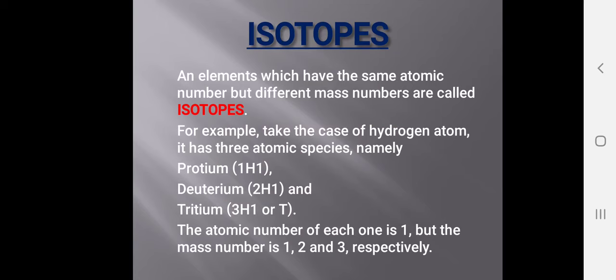Isotopes are elements that have the same atomic number but different mass numbers. For example, hydrogen has three atomic species: protium, deuterium, and tritium. All three have the same atomic number of 1, but their mass numbers are 1, 2, and 3 respectively. Protium has mass number 1, deuterium has mass number 2, and tritium has mass number 3.